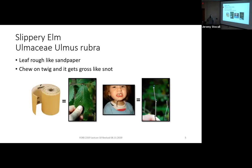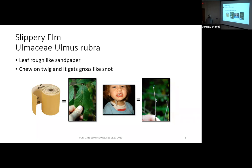Another elm we haven't learned yet that you may find there is slippery elm. Slippery elm is pretty easy to identify — you can grab a leaf, rub it in your hand, and you'll feel it's very sandpapery, scabrous in texture. If you chew on the twig, it goes real snotty in texture — a mucusy twig if you chew it. That's why it's called slippery elm. So there are a couple of elms you may find in this cover type.